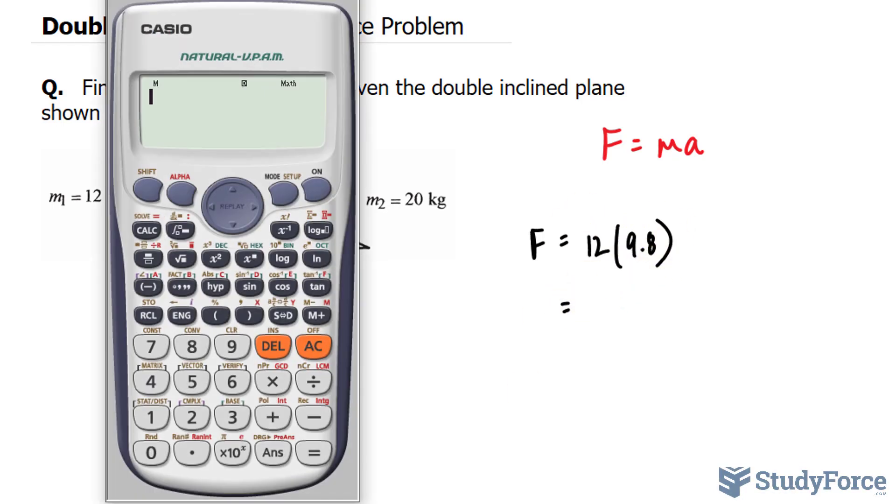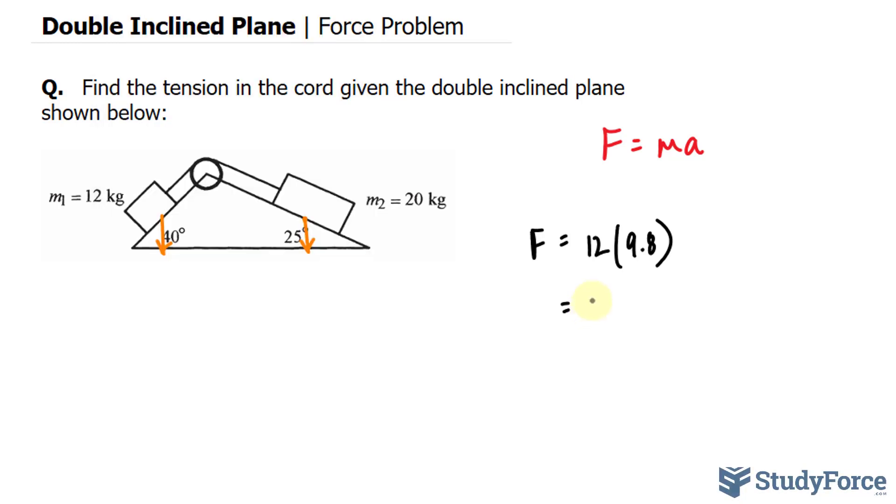Multiplying these two values, let's use your calculator, 12 times 9.8 is equal to 117.6. 117.6 newtons. That's the unit for force.